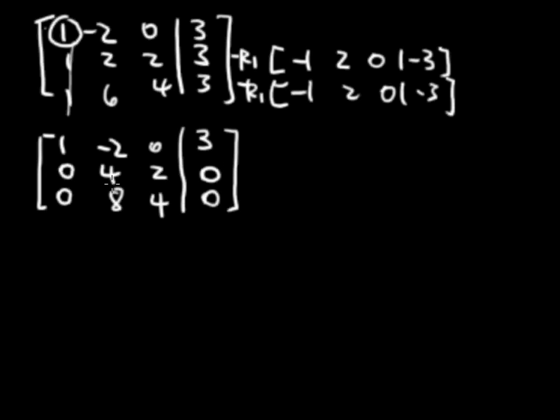Here I have to get row 2 a leading one now. So I'm going to get this to be a 1 first by multiplying this row by 1 fourth. So I have 0, 1, 1 half, 0. And the other two rows just carry over.